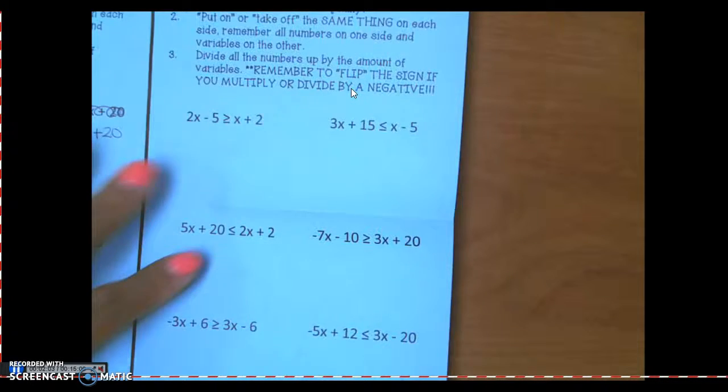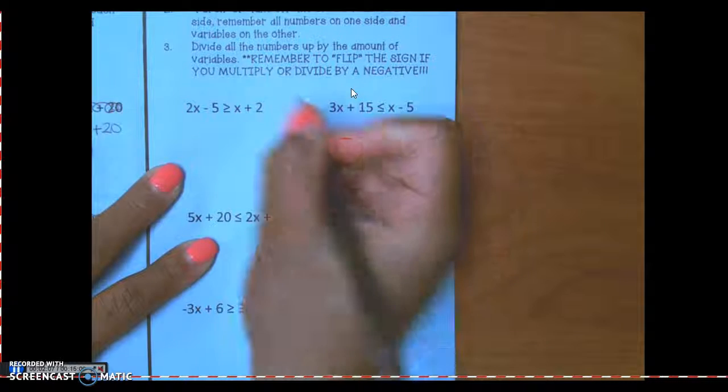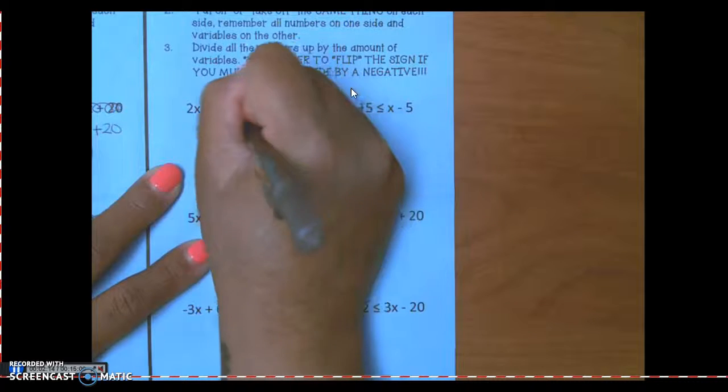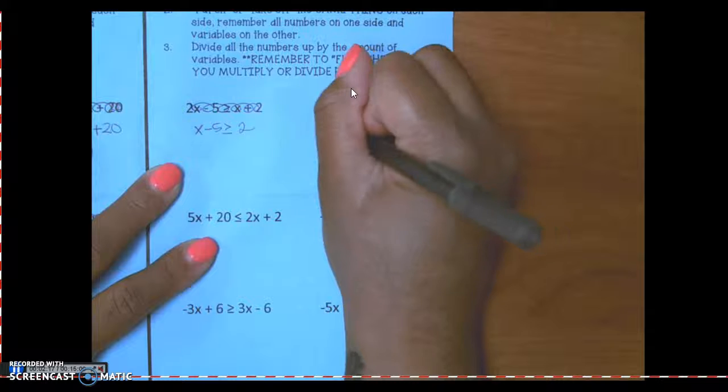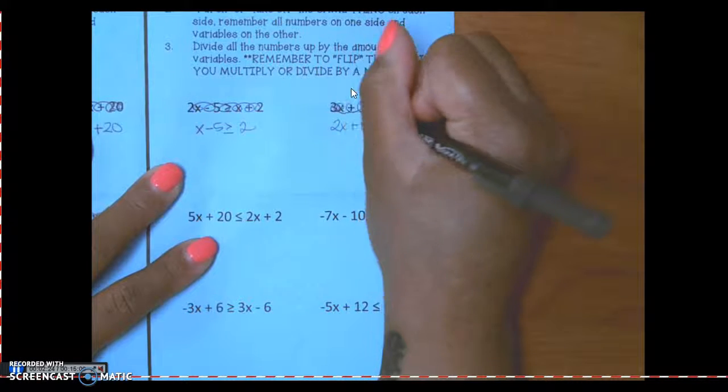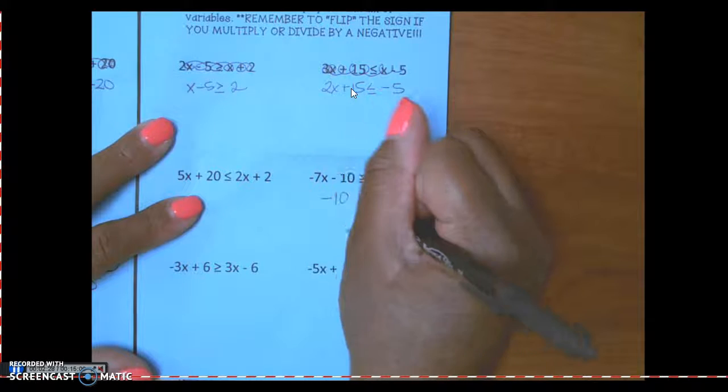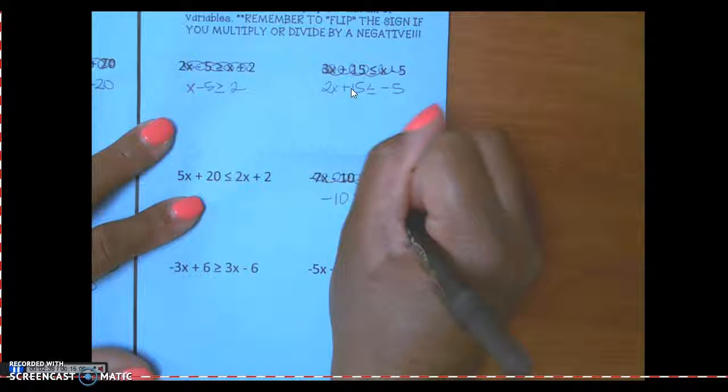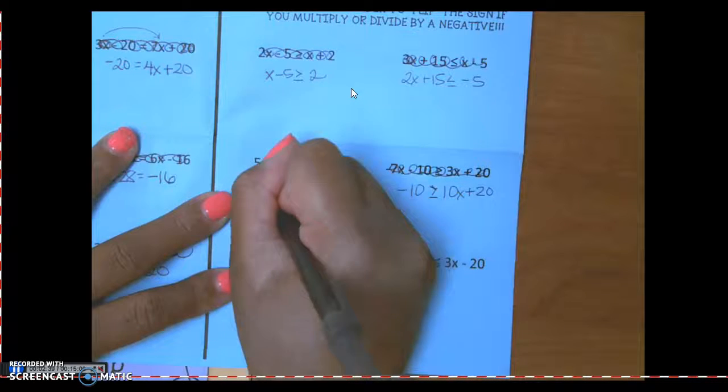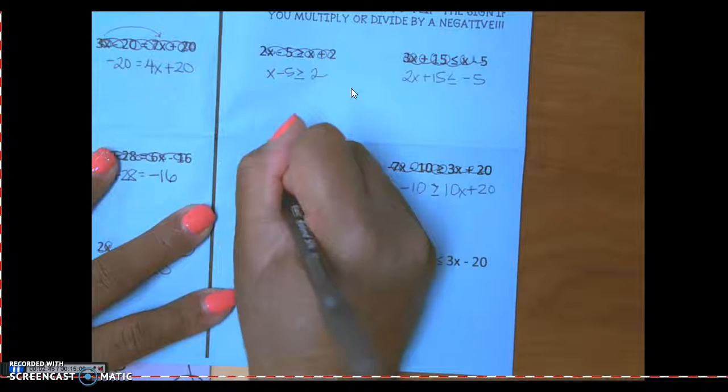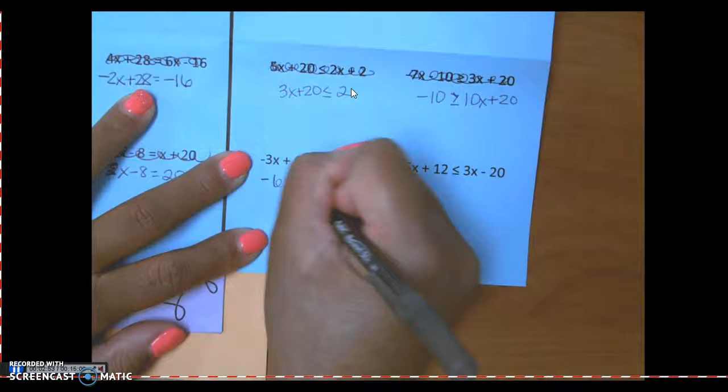13 equals x plus 30, scratch this out. On the other side, I'll let you copy it once you're done writing these down. I have 2x minus 5, so I'm going to move this x over here, which leaves me with x minus 5 is greater than or equal to 2. 2x plus 15 is less than or equal to negative 5. Negative 10 is greater than or equal to 10x plus 20.